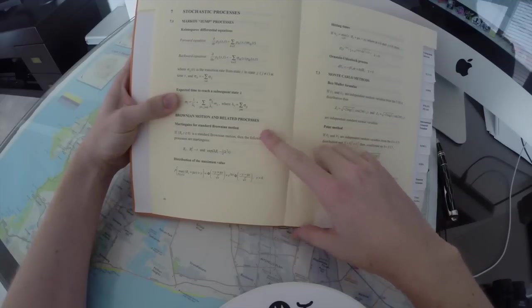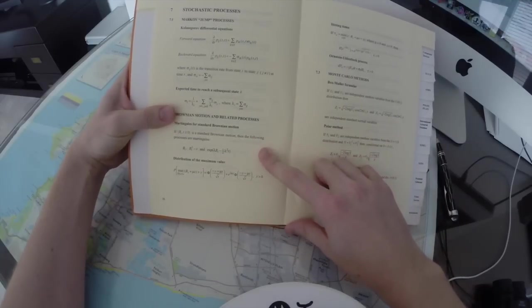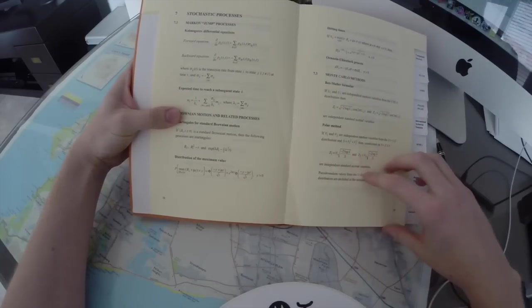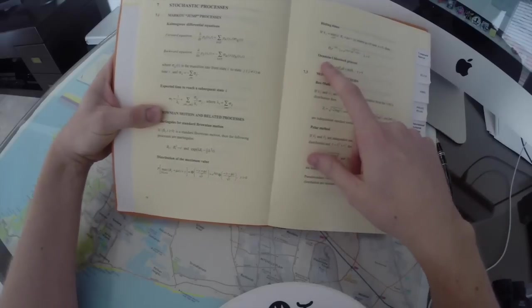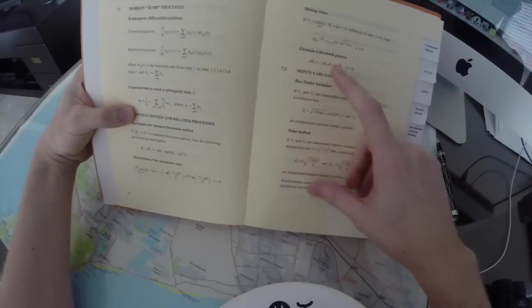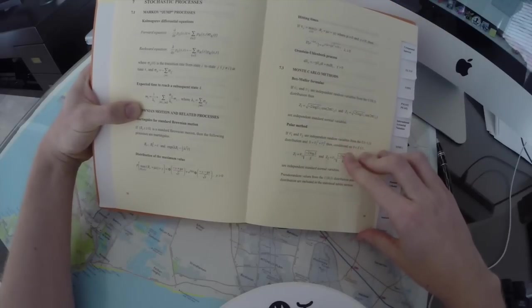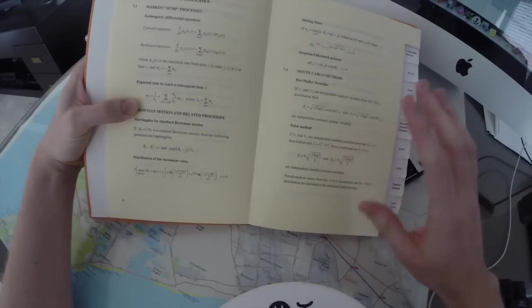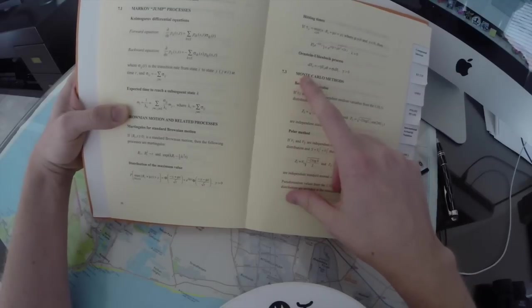Brownian motion and related processes, martingales for standard Brownian motion, distribution of maximum value, hitting times, I'm not even going to try and pronounce the Ornstein-Uhlenbeck process. You know when it's German, it's really insane, genius had come up with that.